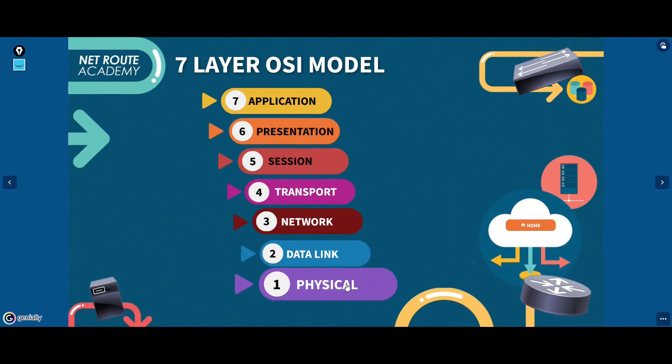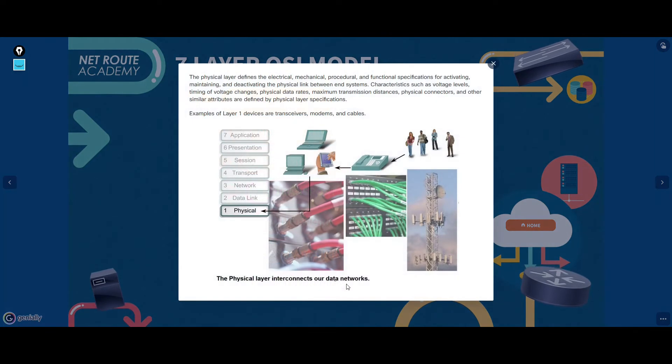Layer 1, the physical layer, is responsible for sending bits via wired or wireless transmission. These bits can be transmitted as a wavelength to the air, for example Wi-Fi,